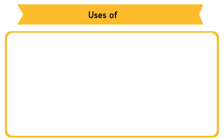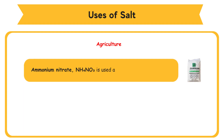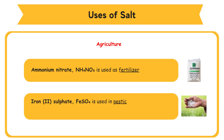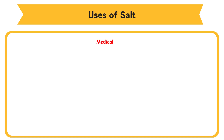Uses of salt — Agriculture: Ammonium nitrate, NH4NO3, is used as fertilizer, while iron(II) sulfate, FeSO4, is used in pesticides to kill pests and grass.